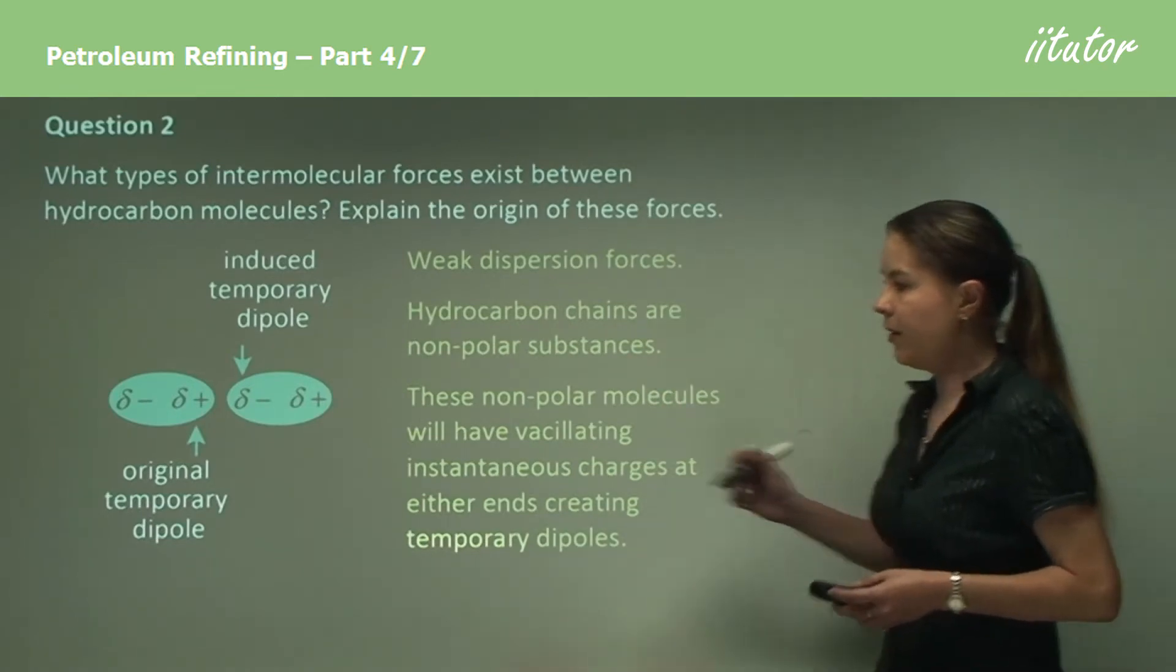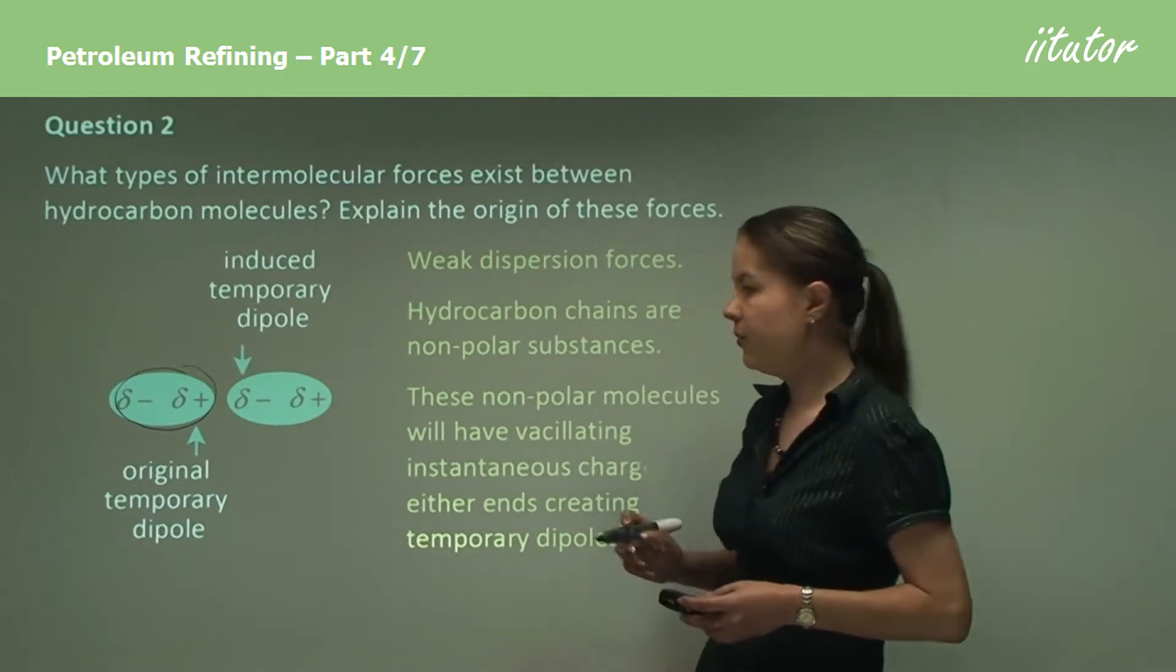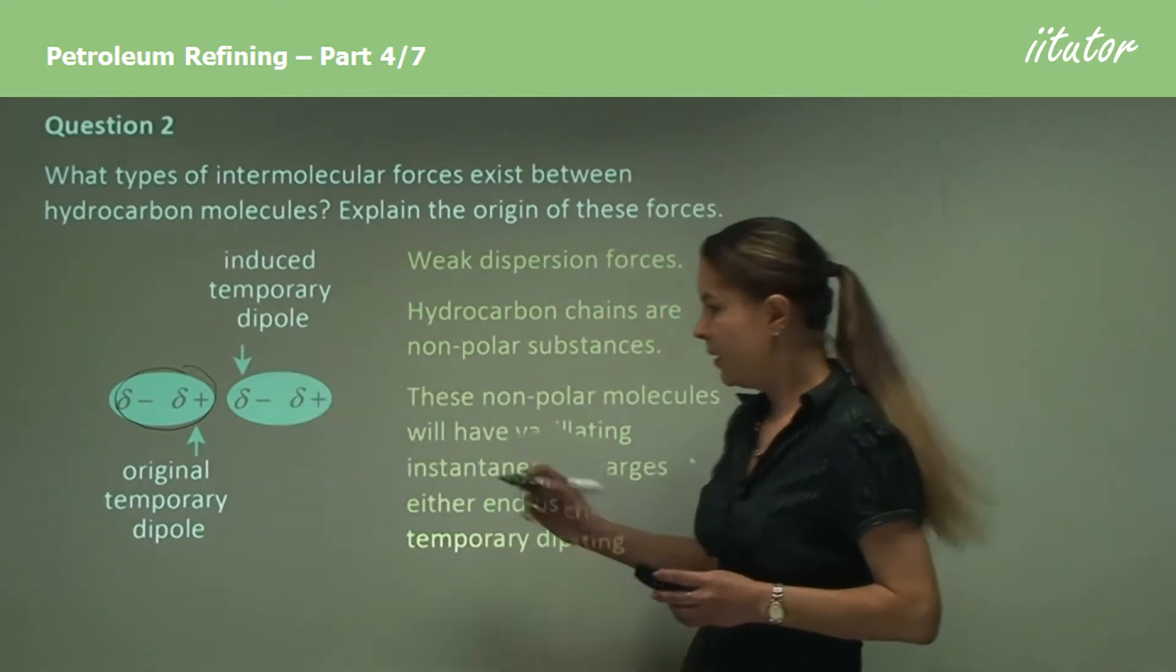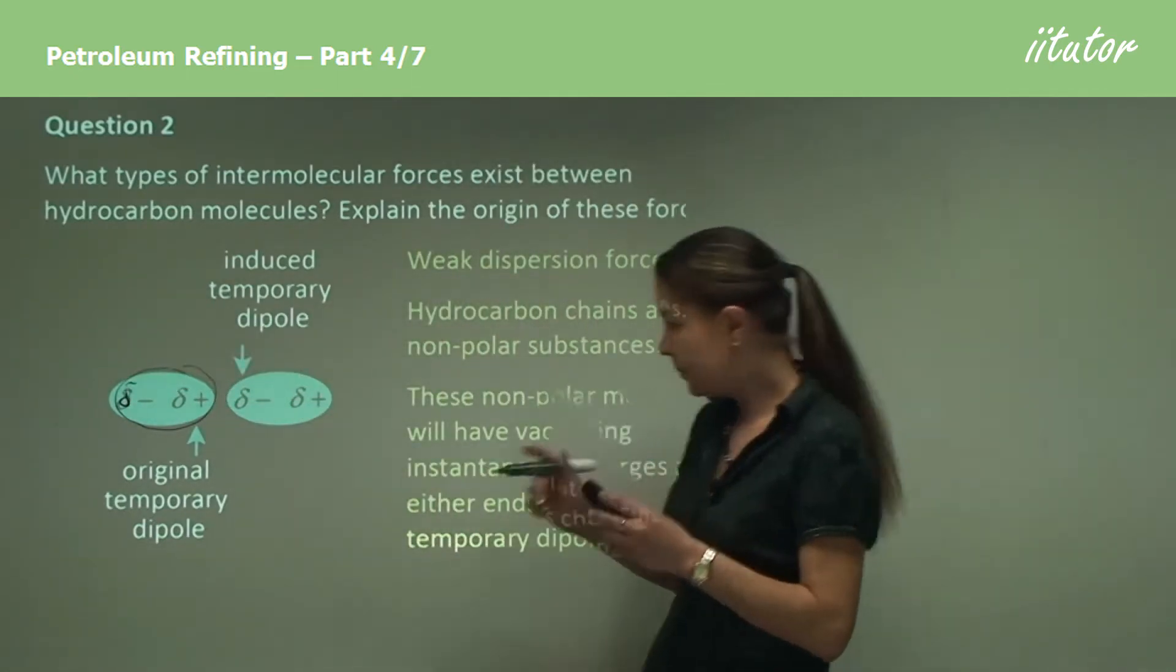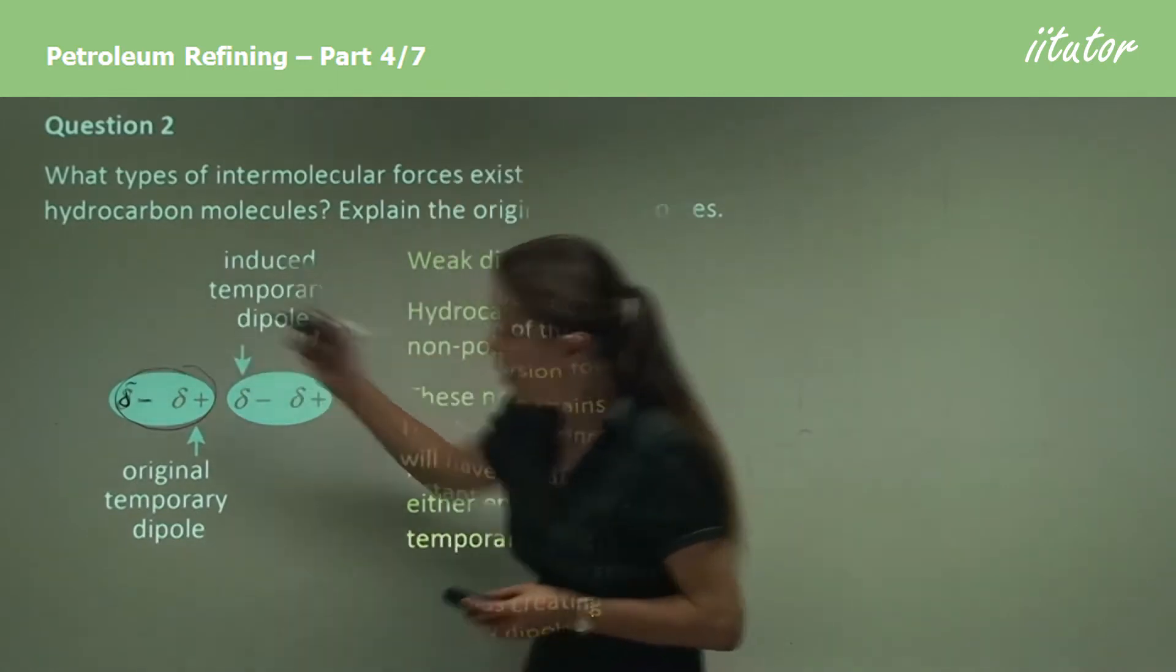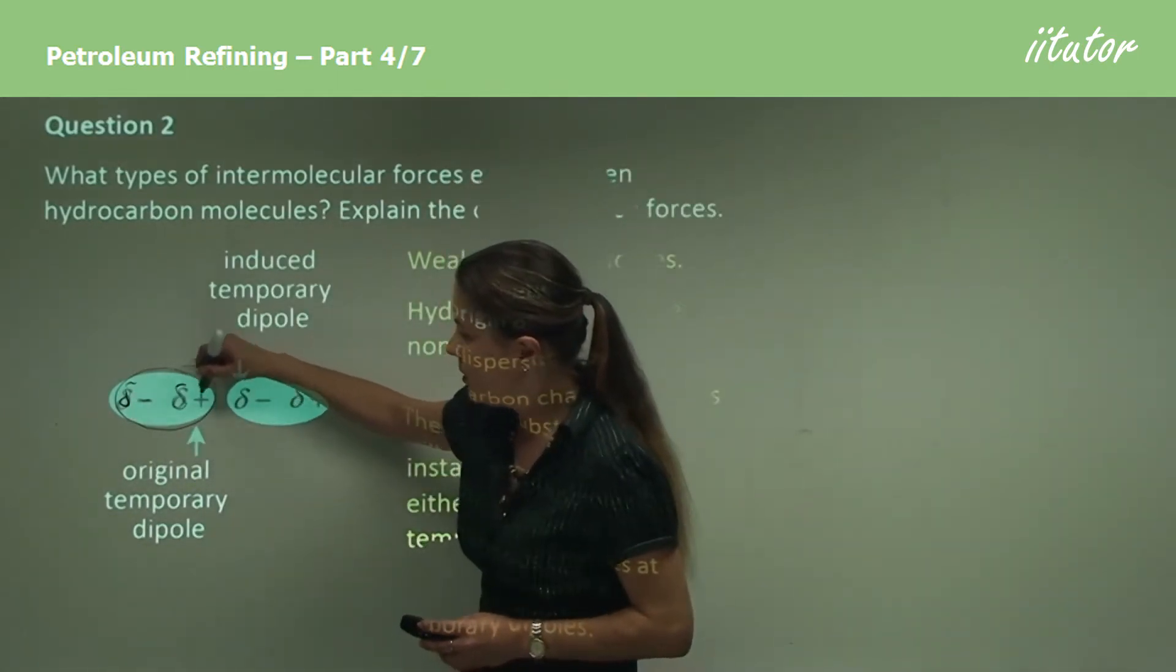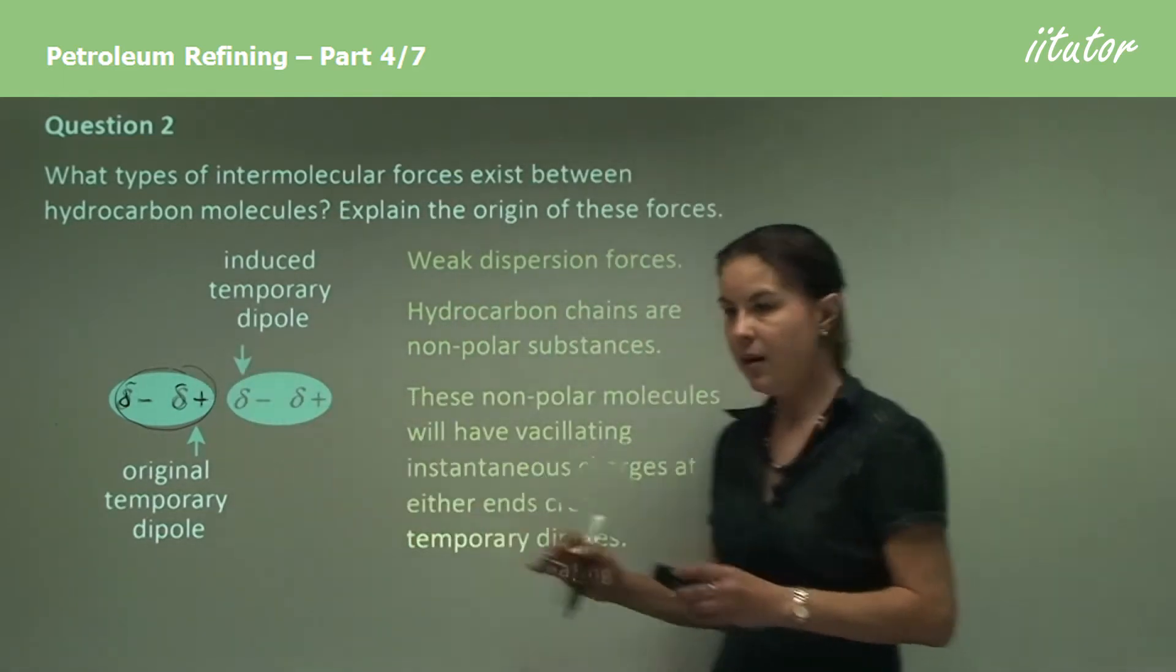So looking at our diagram, if we imagine that this is one hydrocarbon molecule on the left, let's imagine it's by itself for now. These symbols here are symbols for delta, which means slight. So we have a slight delta negative, slight negative charge on the left, and a slight positive charge on the right. And that's an original temporary dipole.